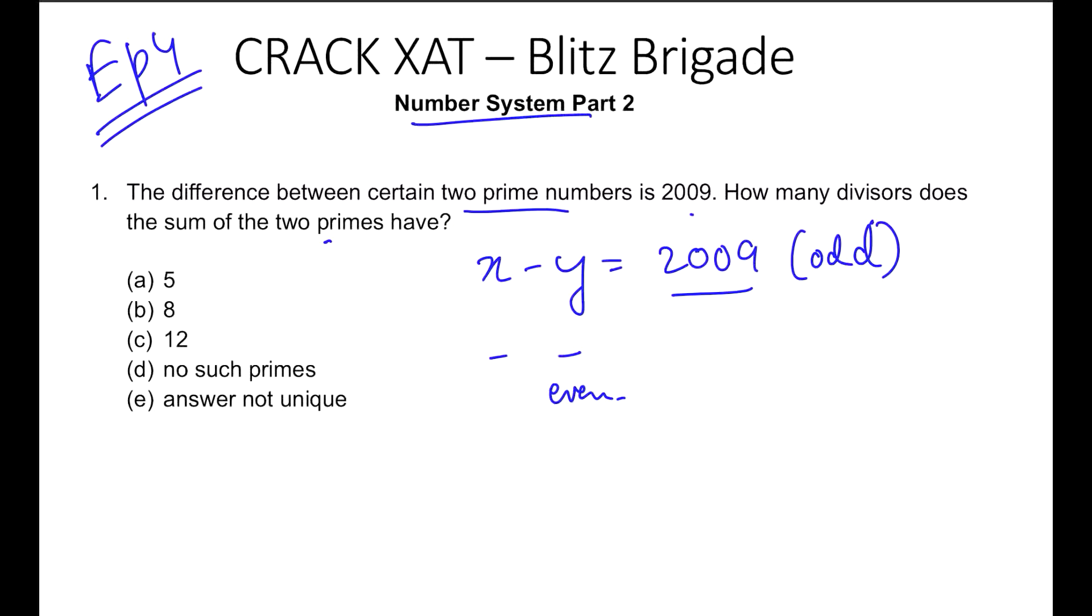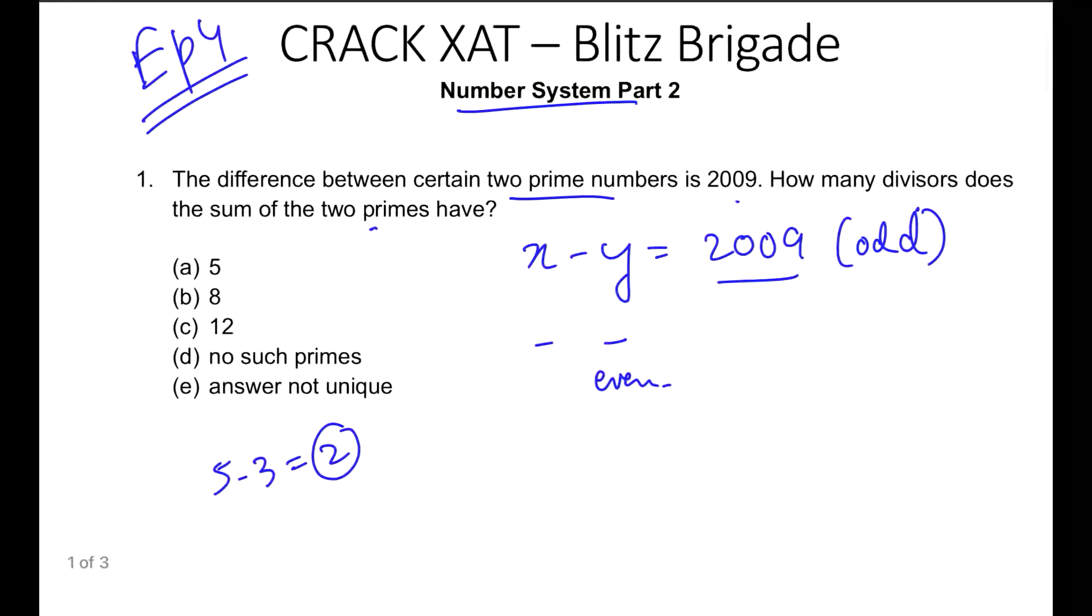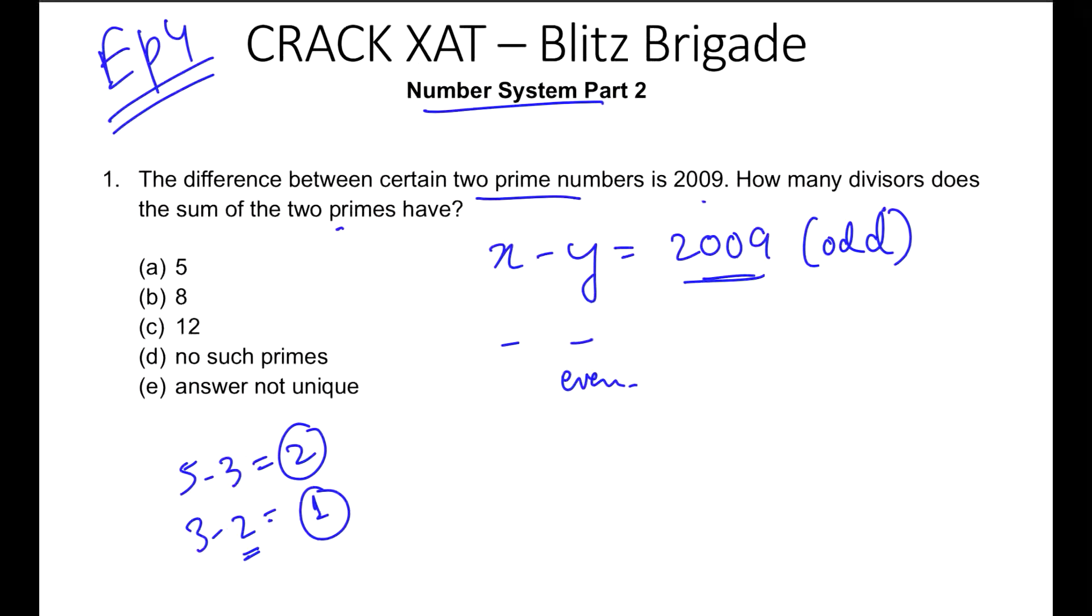The difference between two prime numbers, x minus y is 2009, and the difference can be odd only when one of the prime numbers is even. 5 minus 3 gives you an even difference, but 3 minus 2 gives you an odd difference. You have to have an odd prime and even prime so the difference is odd. We have only one even prime, that is 2. So definitely one of the numbers is 2. So I took y here, smaller number is 2. If the smaller number is 2 and the difference is 2009, then x equals 2011.